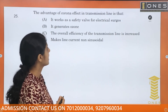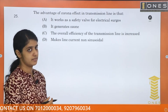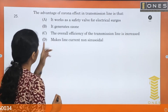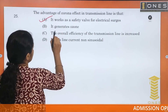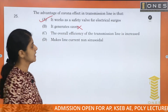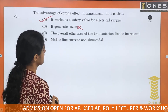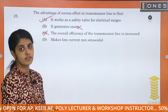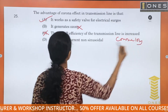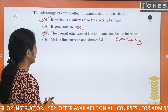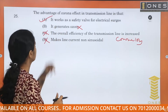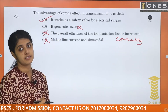The advantage of the corona effect in a transmission line is that it works as a safety valve for electric service. Generating ozone is not an advantage. Increasing overall efficiency of the transmission line is not correct either, as corona causes losses. The answer is that corona works as a safety valve for electric services.